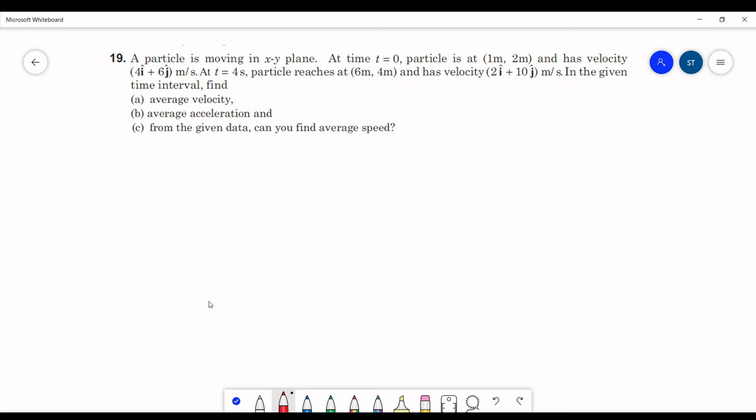So the question given is, a particle is moving in xy plane. At time t equals 0, particle is at (1, 2) and has velocity 4 i cap plus 6 j cap. At t equals 4 seconds, particle reaches (6, 4) and has velocity 2 i cap plus 10 j cap.